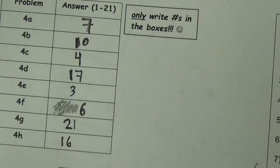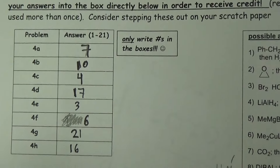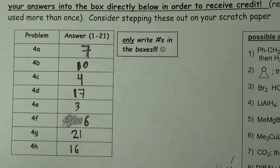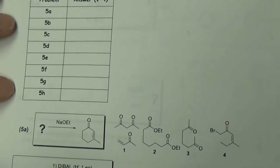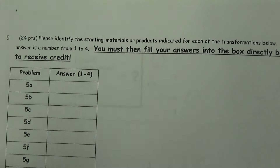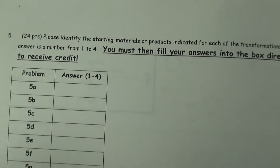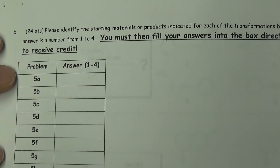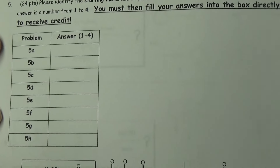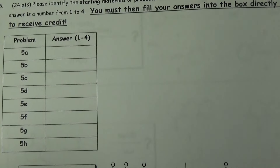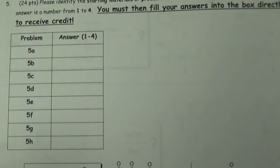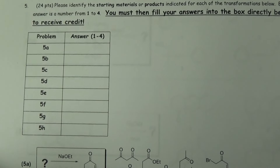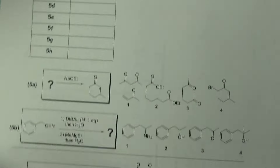So we solved all of these multiple choice reagent problems. Now we're moving on to the next set of problems, which are the 'pick the starting material' or 'pick the product' type problems. It's also eight problems, three points each — 24 points, a lot of points. Make sure you really step through these. Let's try the first one.